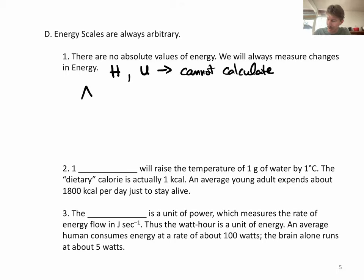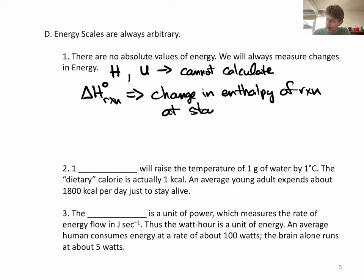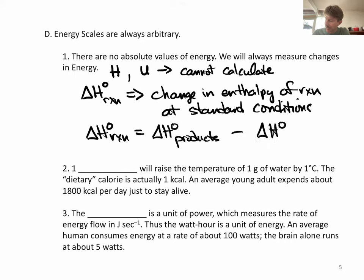What we can calculate, and what we will calculate multiple times, is delta H. This is the change in enthalpy of reaction at standard conditions. You calculate delta H knot reaction as the delta H knot of the products minus delta H knot of the reactants.